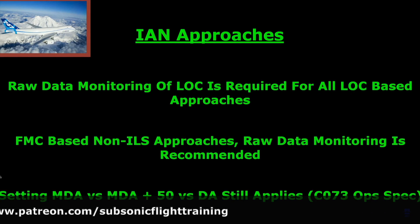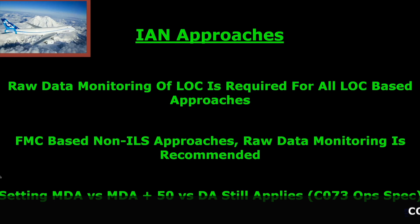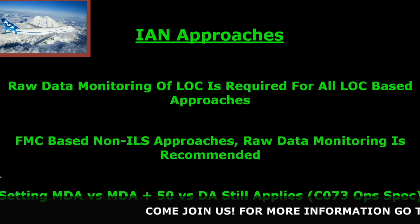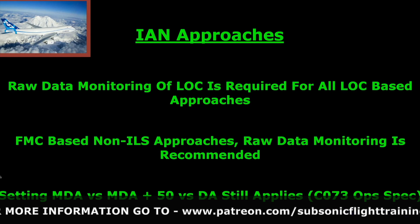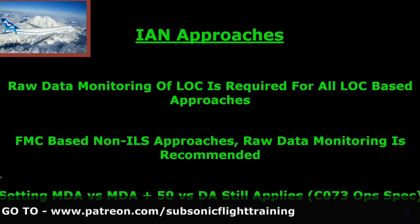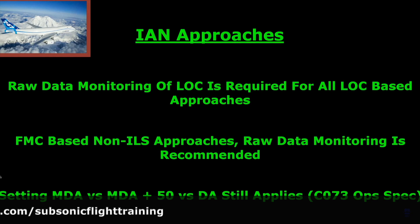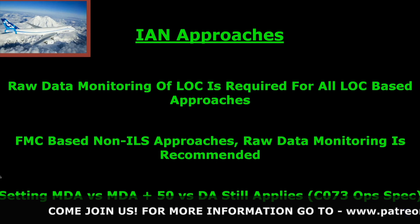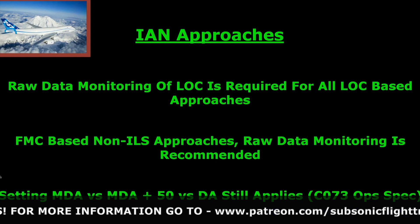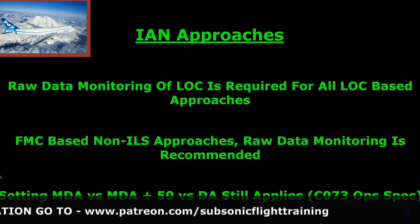Raw data monitoring of the localizer is required for all localizer-based approaches — you'll have the localizer displayed on the PFD. For FMC-based non-ILS approaches, raw data monitoring is recommended. In section C73 of the operation specifications, it lists what type of operator you are as authorized by the FAA. In some cases we don't have to add MDA plus 50 feet — we can set the MDA, and the altitude lost during the go-around is acceptable and approved. If you're not an authorized operator, you add MDA plus 50 to account for altitude loss on a missed approach. In the other case, you're treating the MDA like a DA, where you can lose a little altitude during the missed approach.